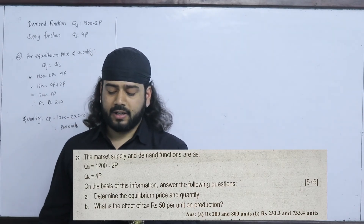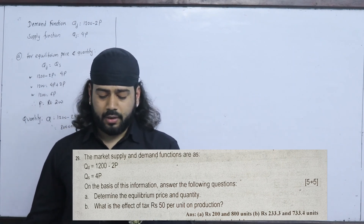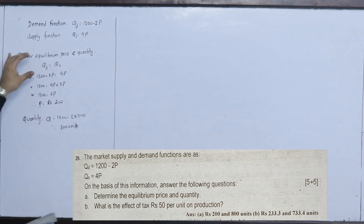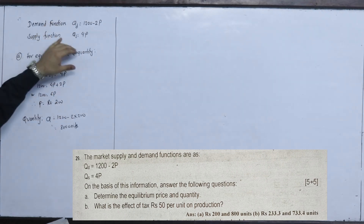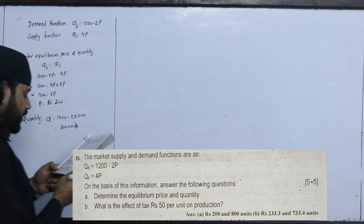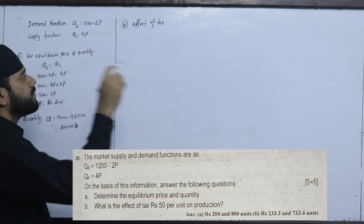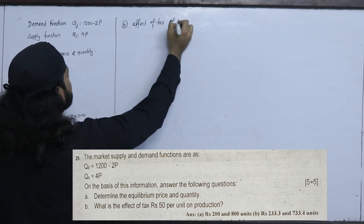The market supply and demand functions are given. On the basis of this information, determine the equilibrium price and quantity. Equating demand and supply, the equilibrium price is $200 and equilibrium quantity is $800. Next, consider the effect of a tax of $0.50 per unit of production imposed on supply.